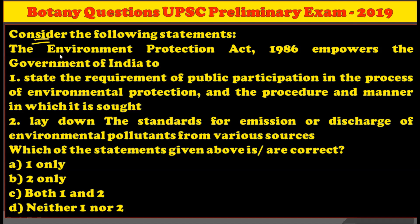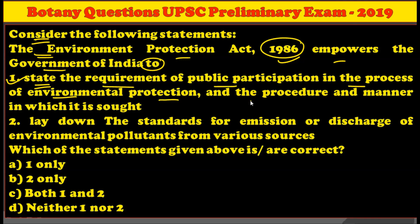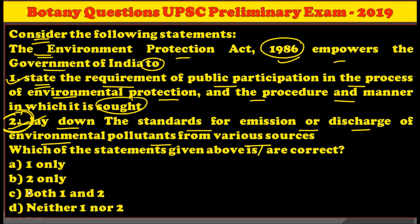The next question is about the Environment Protection Act of 1986. The act empowers the Government of India to do the following: first, state the requirement of public participation in the process of environment protection and the procedure and manner in which it is sought; second, lay down standards for the emission or discharge of environmental pollutants from various sources. Out of these two statements, only the second statement stands true. That is why option number B, that is 2 only, is the right answer.